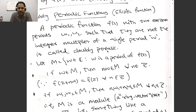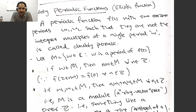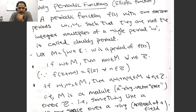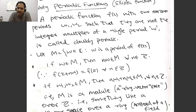Now let us look at the doubly periodic function, also called an elliptic function. A periodic function is called doubly periodic if it has two non-zero periods ω₁ and ω₂ such that all other periods are integer combinations of these two periods. If we denote the set of all periods of f(z) by M, then if ω belongs to M any integer multiple is also in M, and if ω₁ and ω₂ are in M then any integer combination ω₁ + ω₂ is also in M.